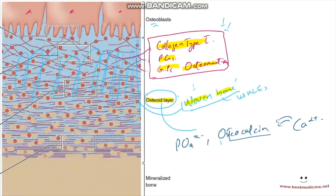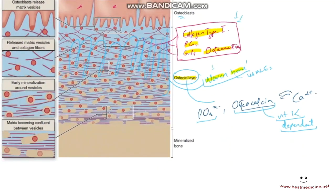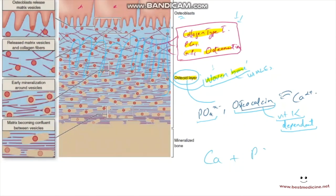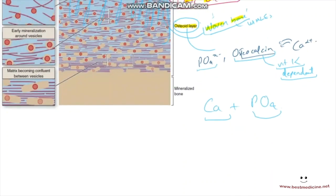Osteocalcin function is vitamin K dependent. The osteoblasts secrete matrix vesicles containing phosphate ions. Calcium and phosphate then combine together to form hydroxyapatite crystals — the mineralized part of the bone.